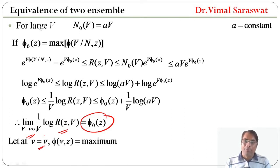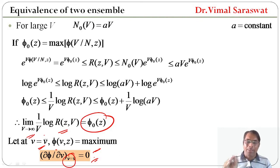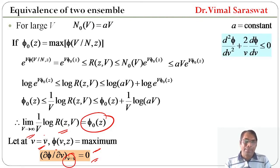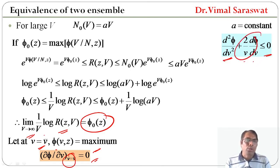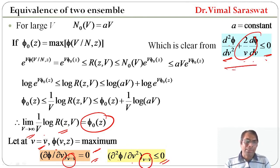Let v̄ be the value of v at which phi is maximum. So, the differential of phi at v equal to v̄ will be 0, because phi is maximum at v equal to v̄. And since d²phi over dv² plus 2 over v times d phi over dv is less than or equal to 0, and d phi over dv is 0 at v̄, it follows that d²phi over dv² at v equal to v̄ is less than or equal to 0, which confirms it is indeed a maximum.